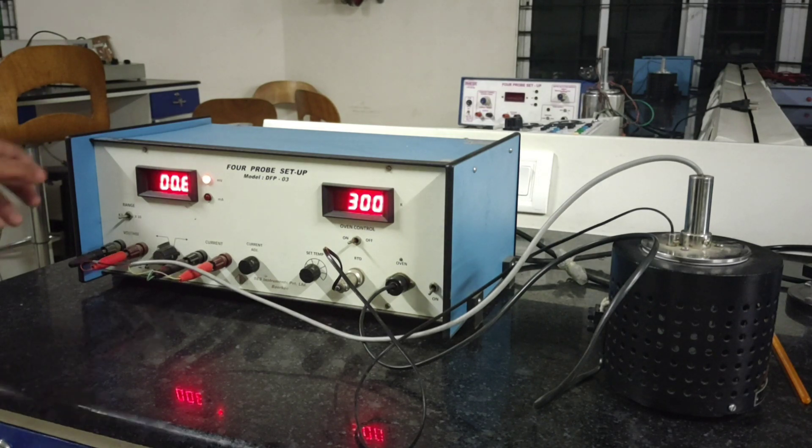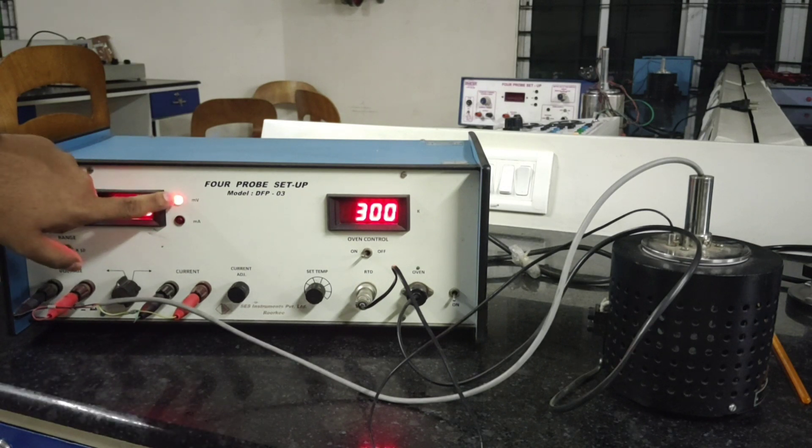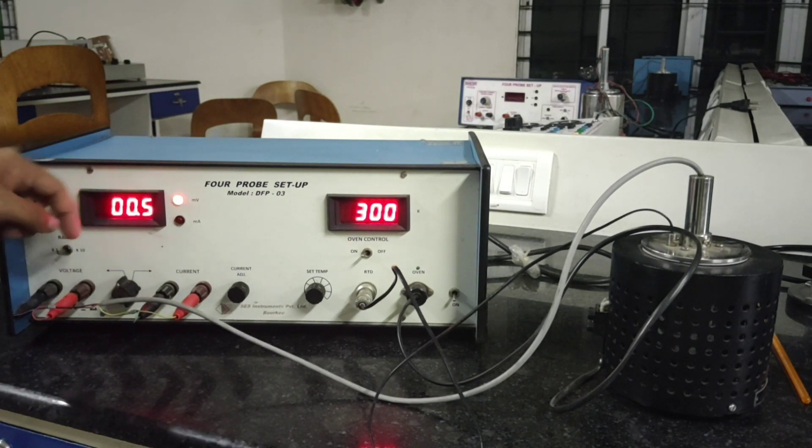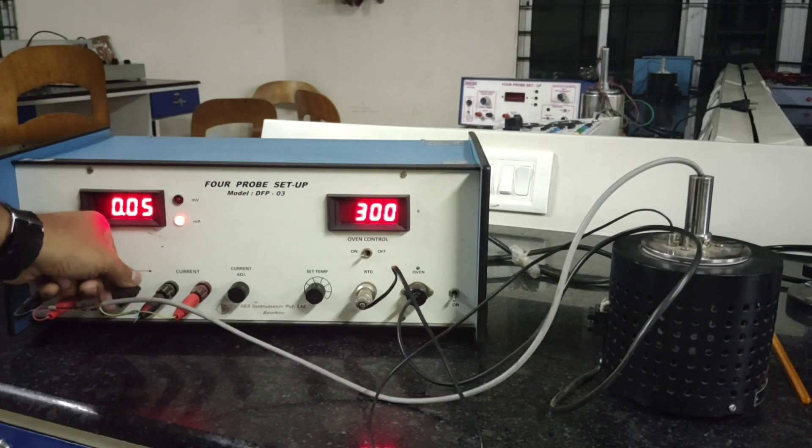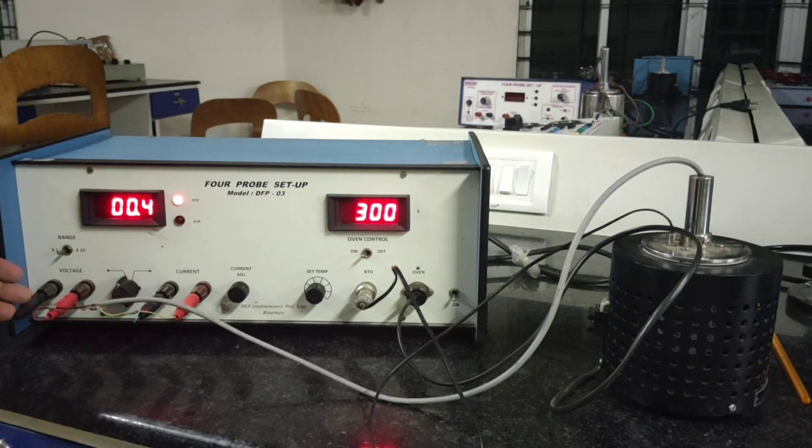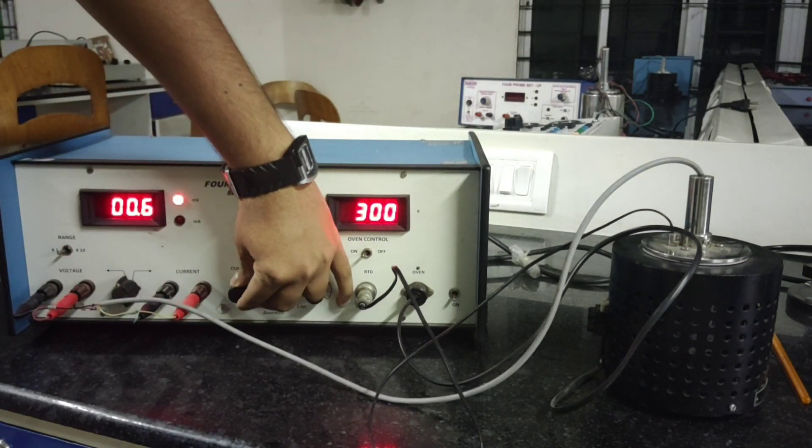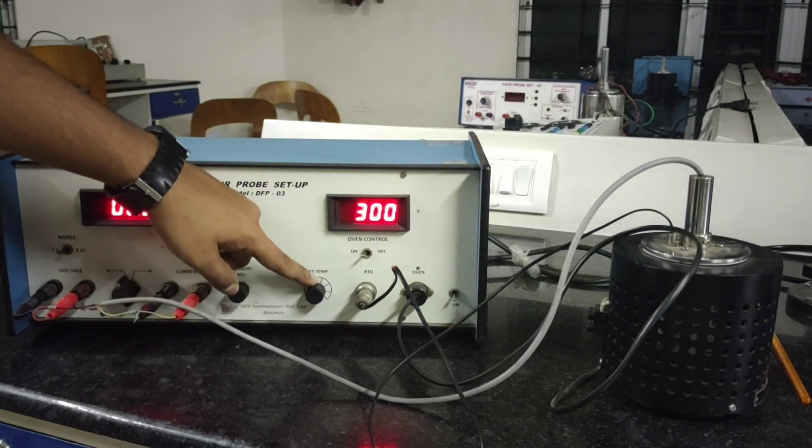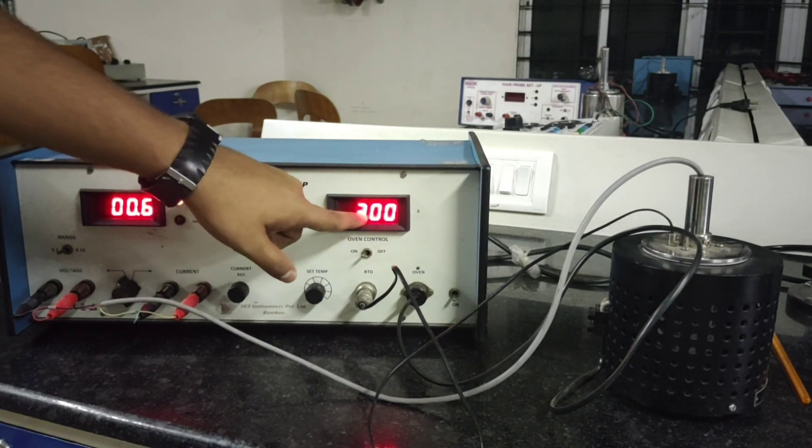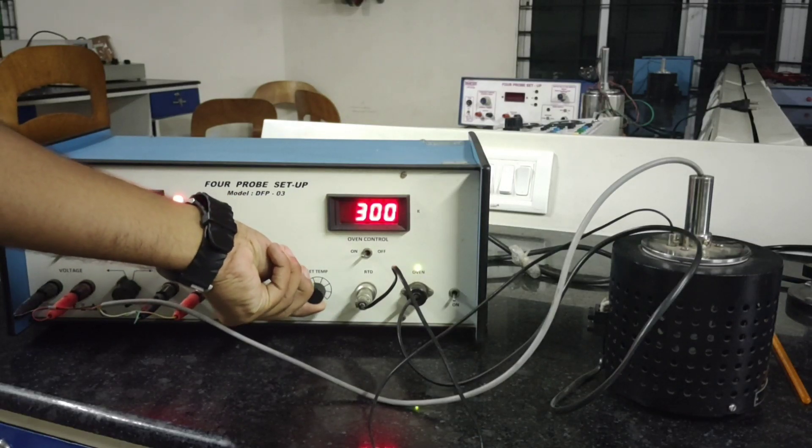As you can see, this is the millivolt meter and this is the milliampere meter. You have to turn on this toggle switch to switch between the millivolt meter and milliammeter. This knob is for adjusting the current and this knob is for adjusting the temperature of the oven. Remember, when you increase or decrease the temperature, give the oven some time to adjust to the new temperature, otherwise it will give you wrong readings.